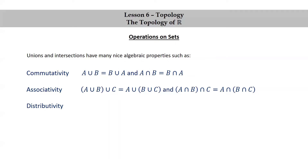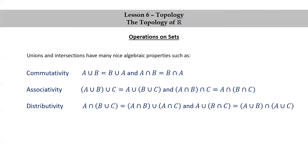We have distributivity. The union distributes over the intersection and the intersection distributes over the union. So the intersection of A with (B union C) is equal to the union of (A intersect B) and (A intersect C).